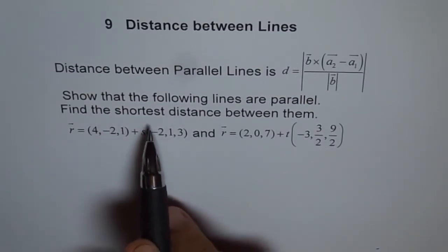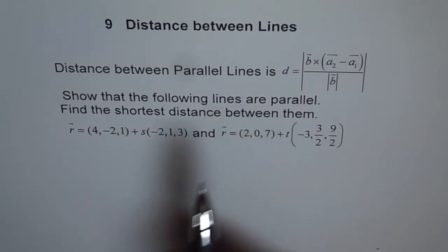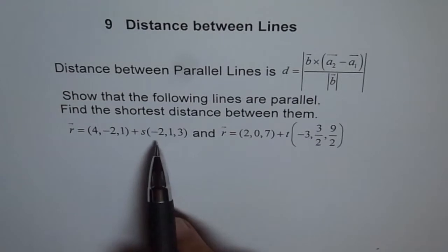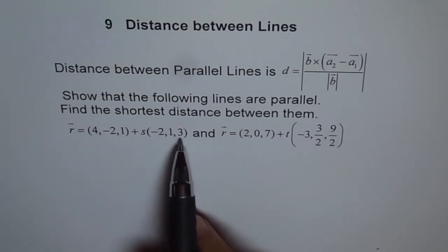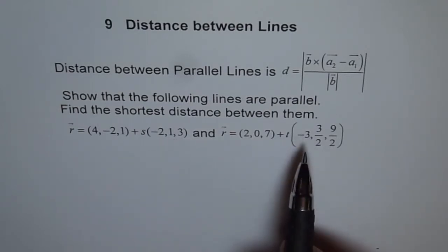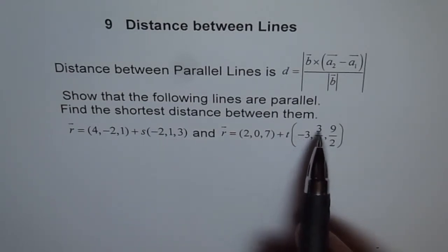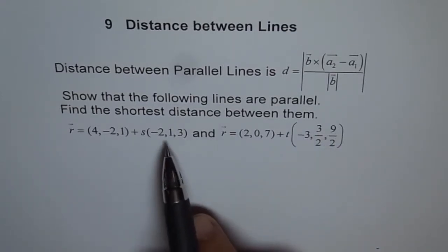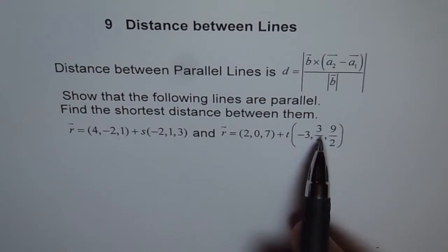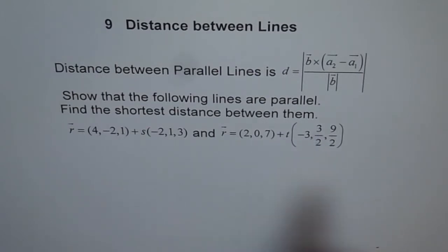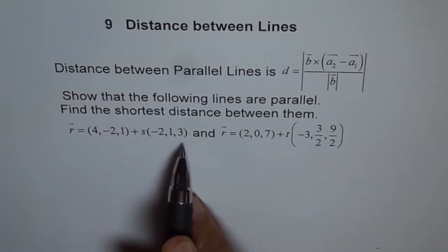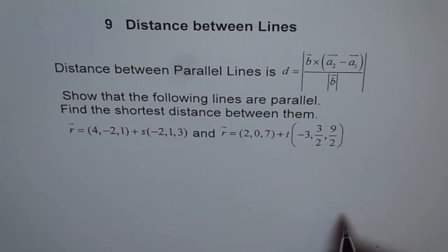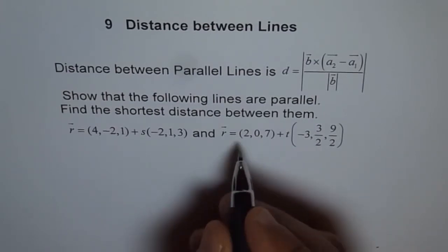The first part is to show that the lines are parallel. So, we have these two lines. Here we have direction vector minus 2, 1, 3. And here we have minus 3, 3 over 2, and 9 over 2. We can see that 1 is related to the second as 3 over 2. So, if I multiply all by 3 over 2, let me check if we get the same thing.